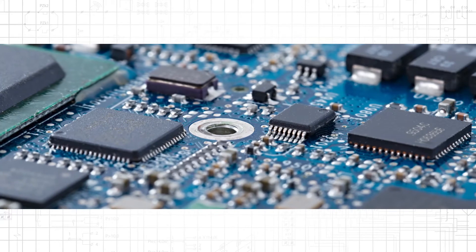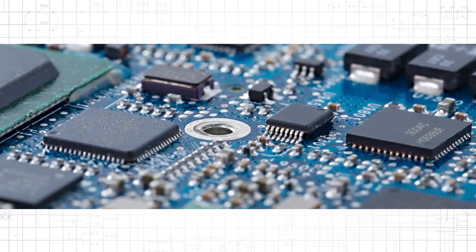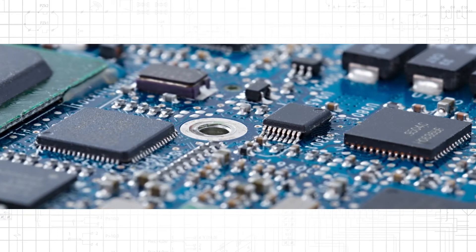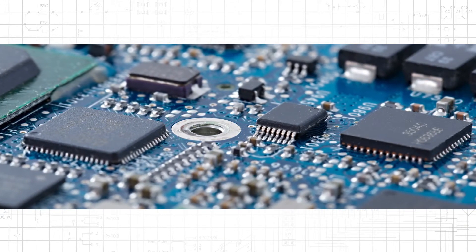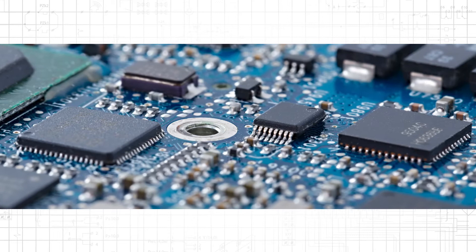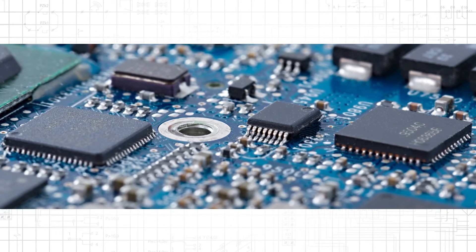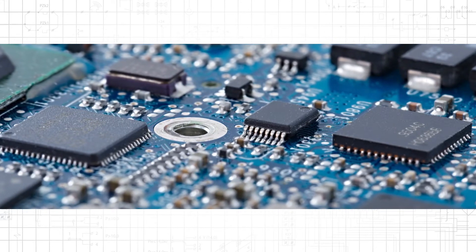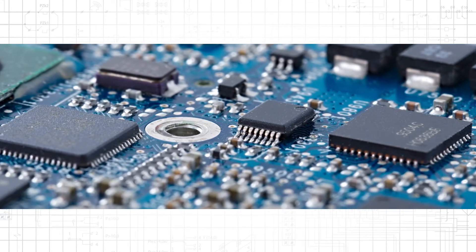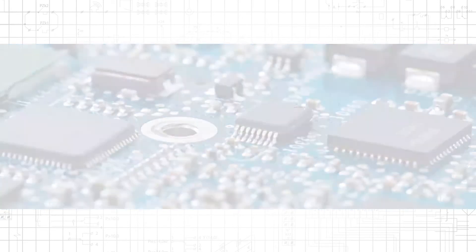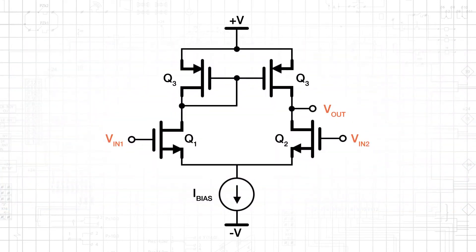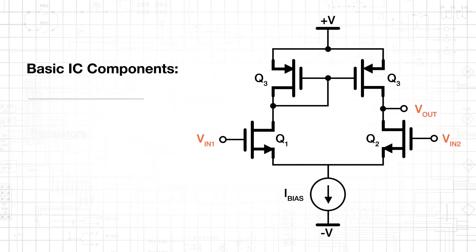A large proportion of the activity performed by a modern electronic device occurs inside integrated circuits. Consequently, the difference between analog and digital circuits is rooted in the difference between analog and digital integrated circuits. Analog and digital ICs contain the same basic components, primarily transistors, but also diodes and passive elements.